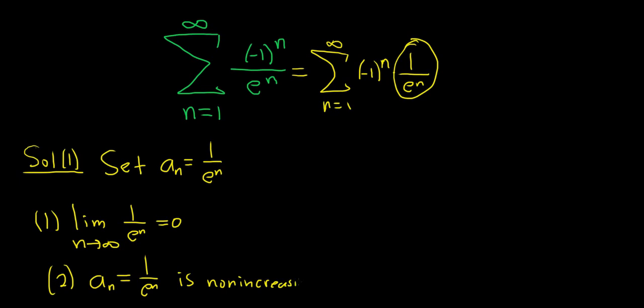Non-increasing means decreasing or staying the same, so both of these conditions check. Then you would just say converges by the alternating series test. That's it.